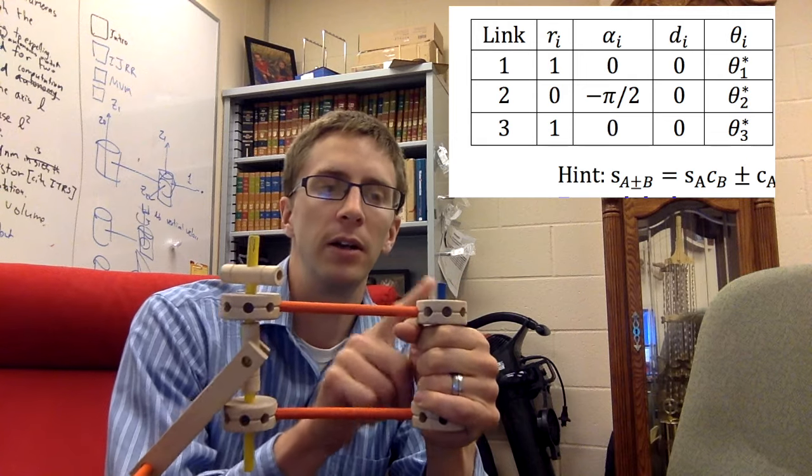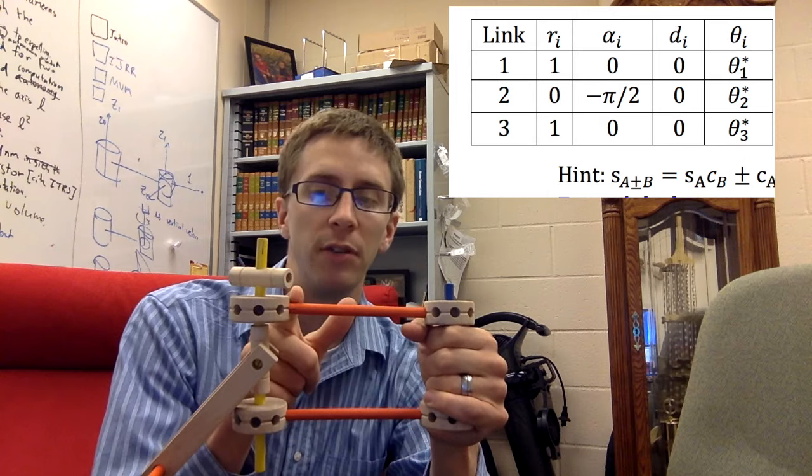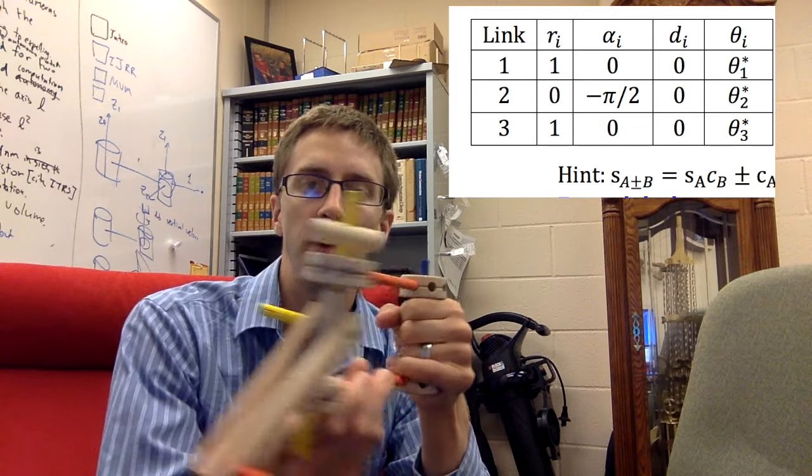So the first joint, the z-axis is this blue axis here, and it's got a radial offset of one unit. So we can rotate around that joint.